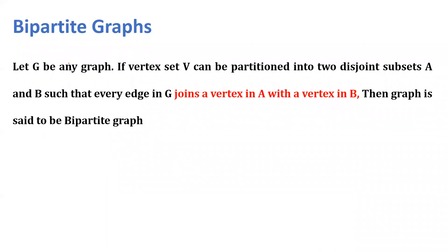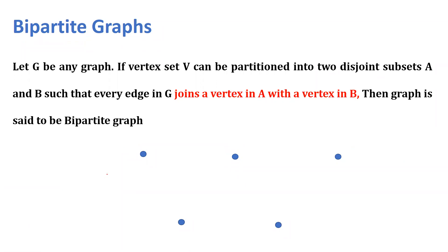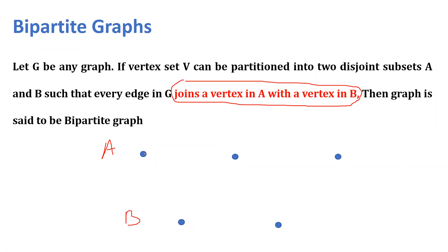Before moving on to the next example of a non-planar graph, you must be aware of bipartite graphs. A graph G is bipartite if its vertex set V can be partitioned into two disjoint subsets A and B such that every edge in G joins a vertex in A with a vertex in B. 'Bi' means two, and 'partite' comes from partition — so bipartite means you can divide the vertex set of a graph into two parts.